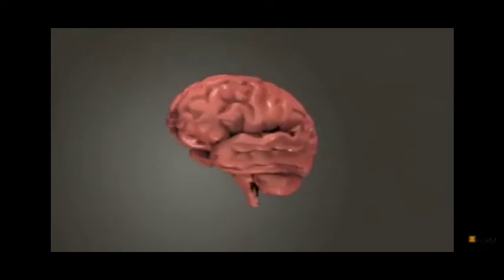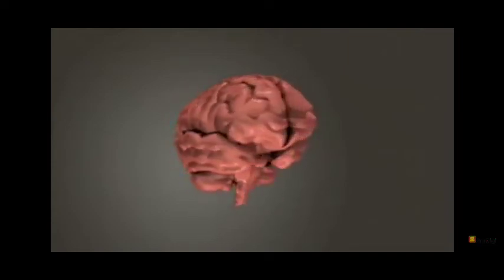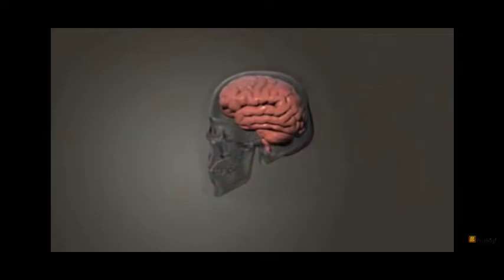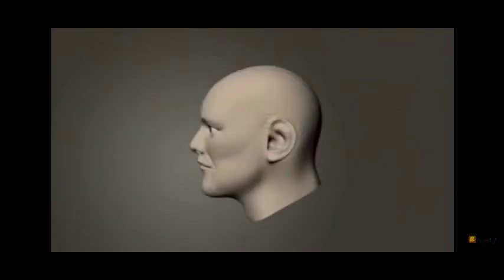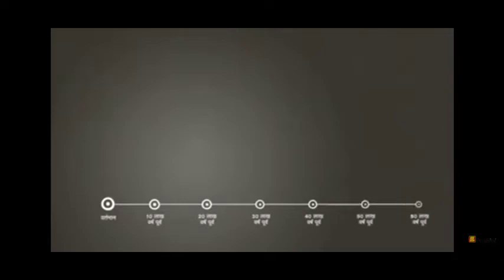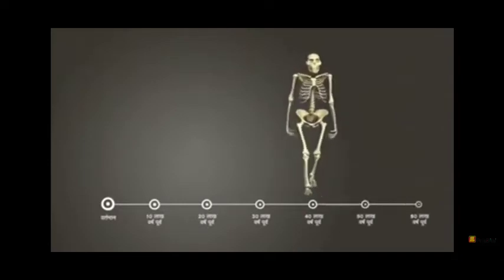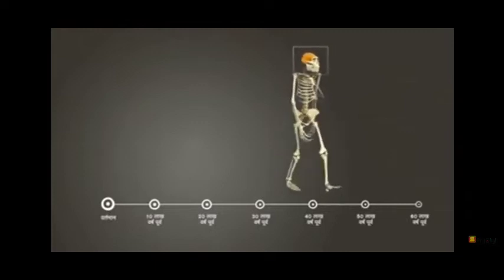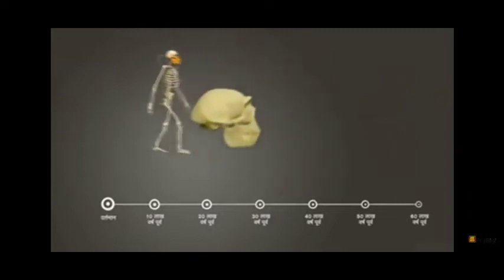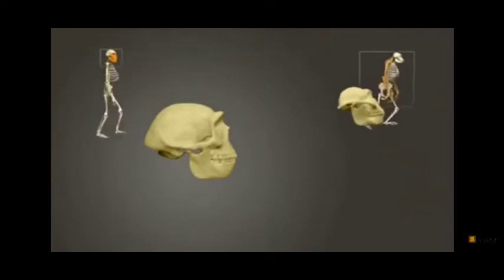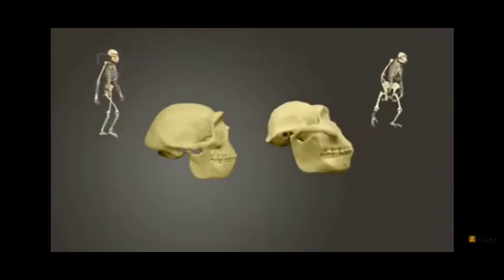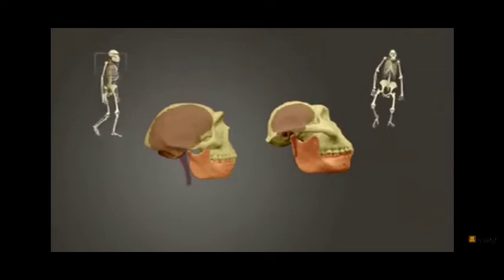This is our skull, and our brain is protected under our skull. This is our brain development over 40 lakh years. This is our chimpanzee brain compared to our human brain.